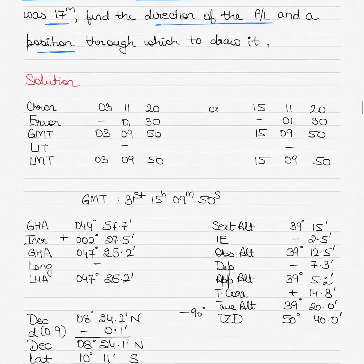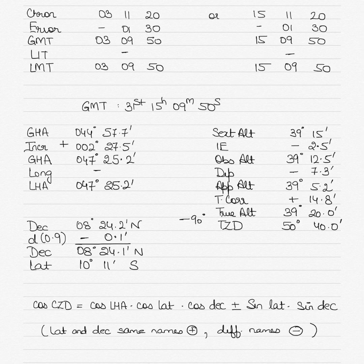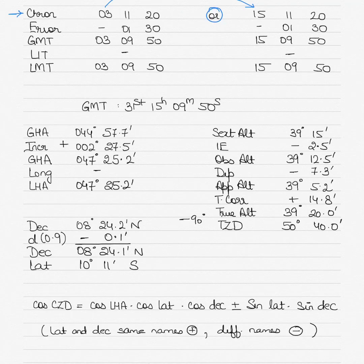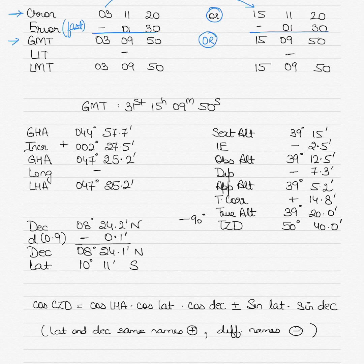Before starting the solution, we determine the ambiguity of the chronometer time. We write down the chronometer time given and add 12 hours to get a second option, giving us two possibilities: 3 in the morning or 3 in the afternoon. We apply the error — since it is fast, we subtract it from both options — and find our GMT time, which also has two options. To find the correct GMT, we apply our longitude-in-time correction.